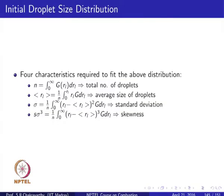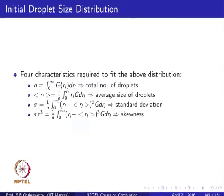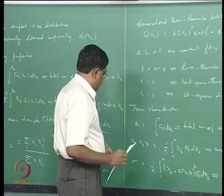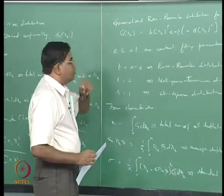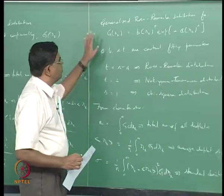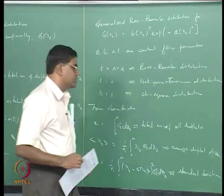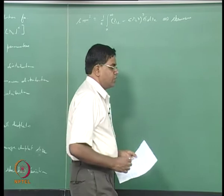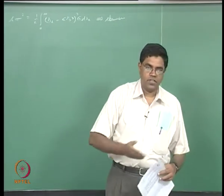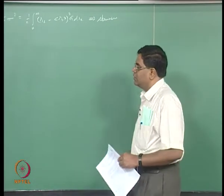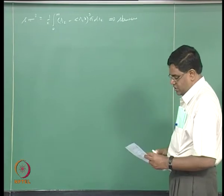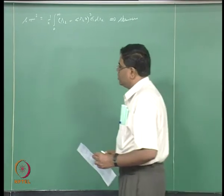If you can obtain data for the total number, mean, standard deviation, and skewness, you can fit the distribution that satisfies these things, obtain the constants, and now have a curve that follows the standard template.